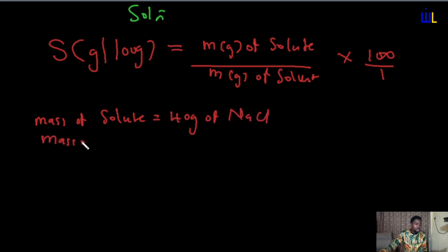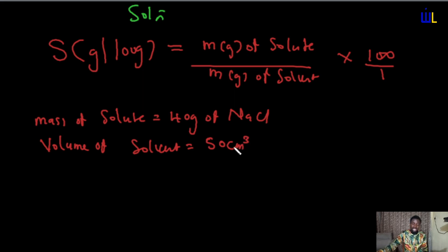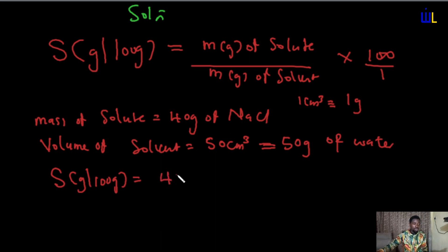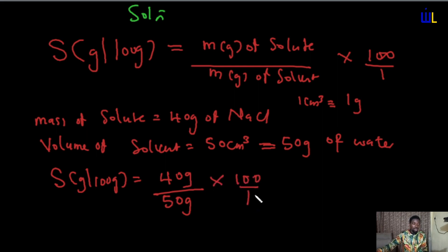The mass of solvent was not given — what we are given is the volume of solvent, which is 50 cm³. Since 1 cm³ is equivalent to 1 gram, 50 cm³ is equivalent to 50 grams of water. So solubility in gram per 100 gram equals the mass of solute (40 g) divided by the mass of solvent (50 g), multiplied by 100 over 1, which equals 80 gram per 100 gram.